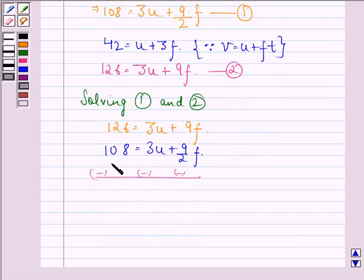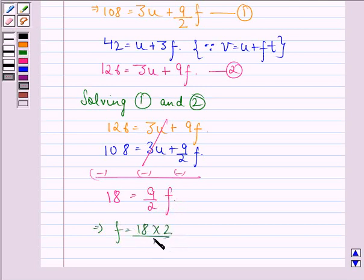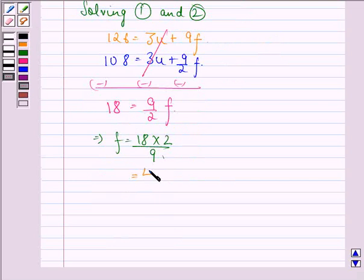126 minus 108 is 18. The 3u terms cancel, so 9 minus 9 by 2 of f is 9 by 2 f. This implies f equals 18 into 2 divided by 9, which equals 4 meters per second squared.